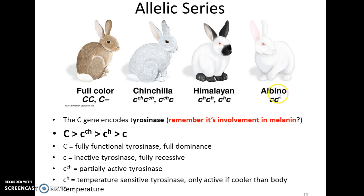The albino phenotype, which we've looked at before in the context of humans, is an allele given the symbol lowercase c. That encodes a tyrosinase that is completely inactive — so it's a loss of function mutation. Now there's a ranking for dominance in these four alleles. The uppercase fully functional tyrosinase gene is fully dominant to all others, and the lowercase albino allele is fully recessive to all others. Where it gets interesting is the chinchilla and the Himalayan alleles — you'll see chinchilla somewhat overplaying the role of Himalayan.